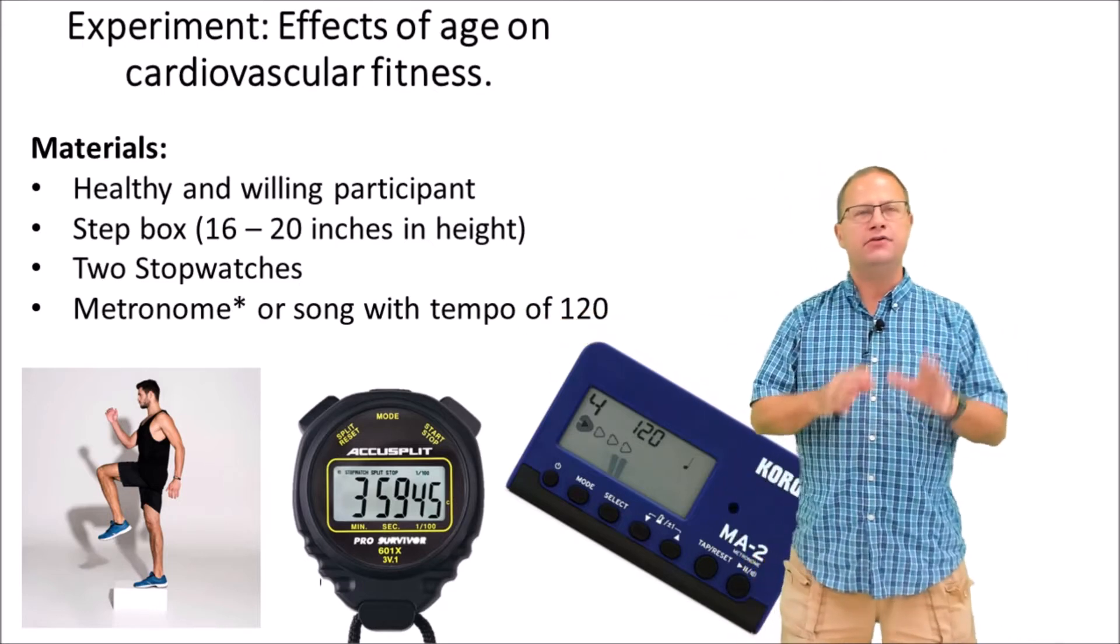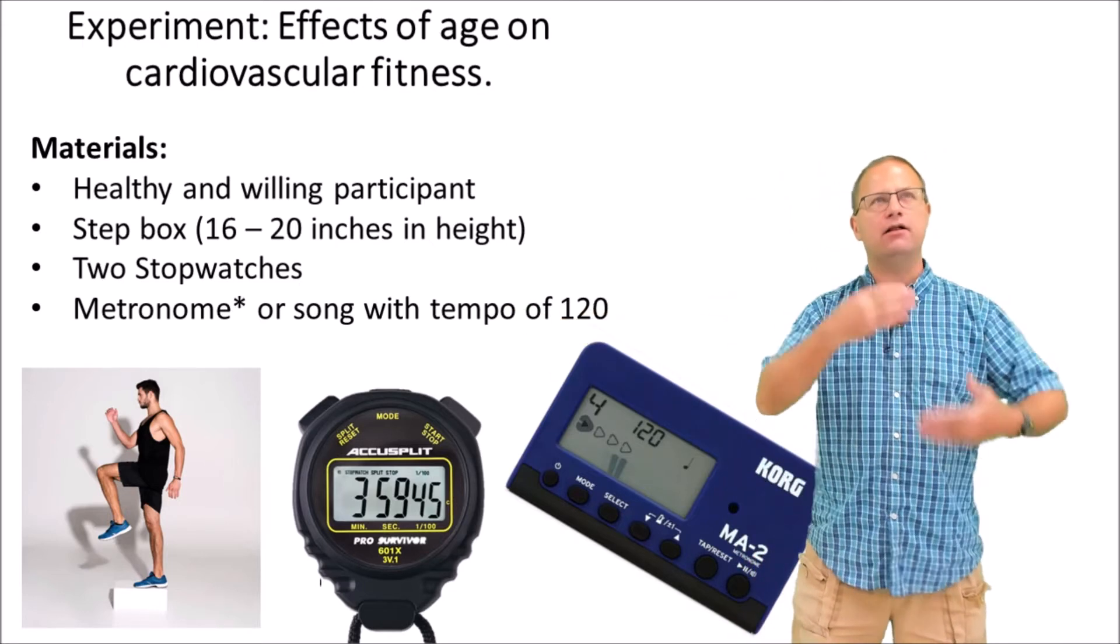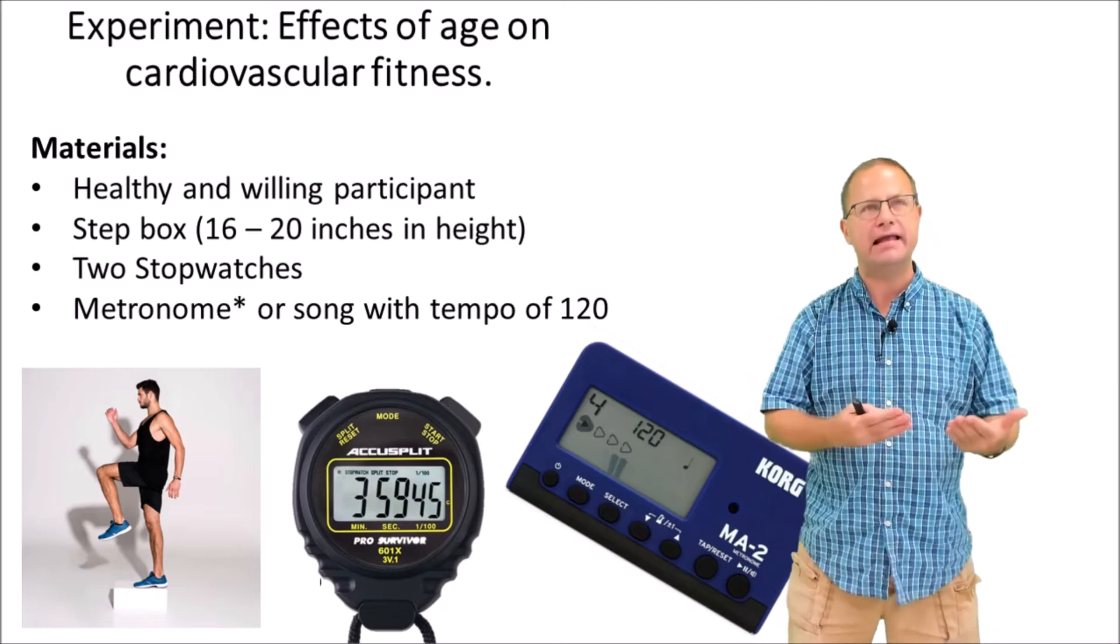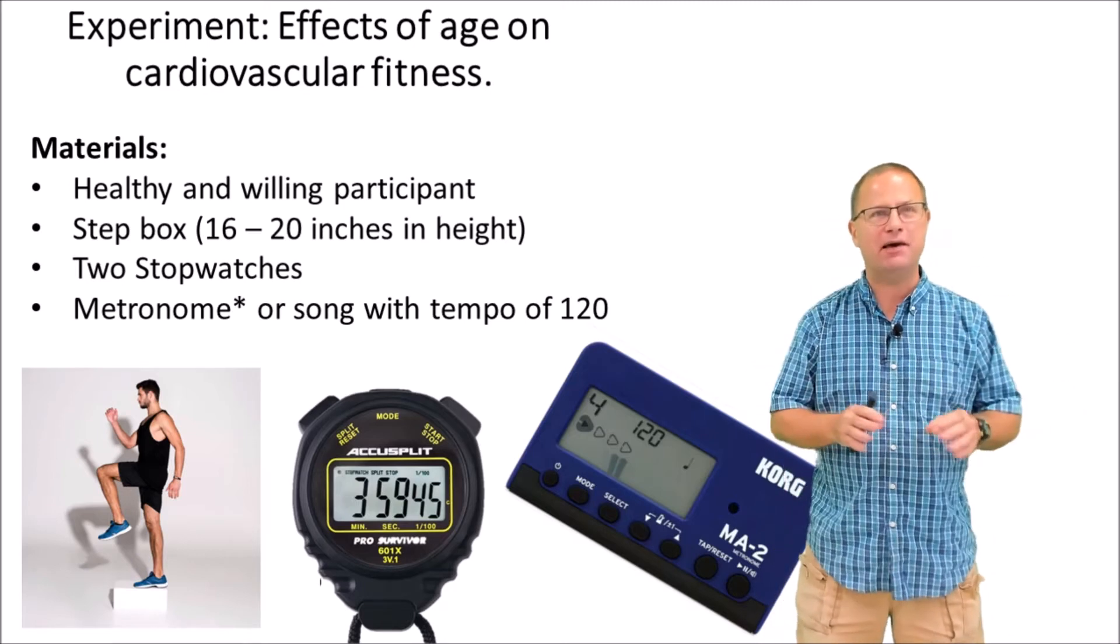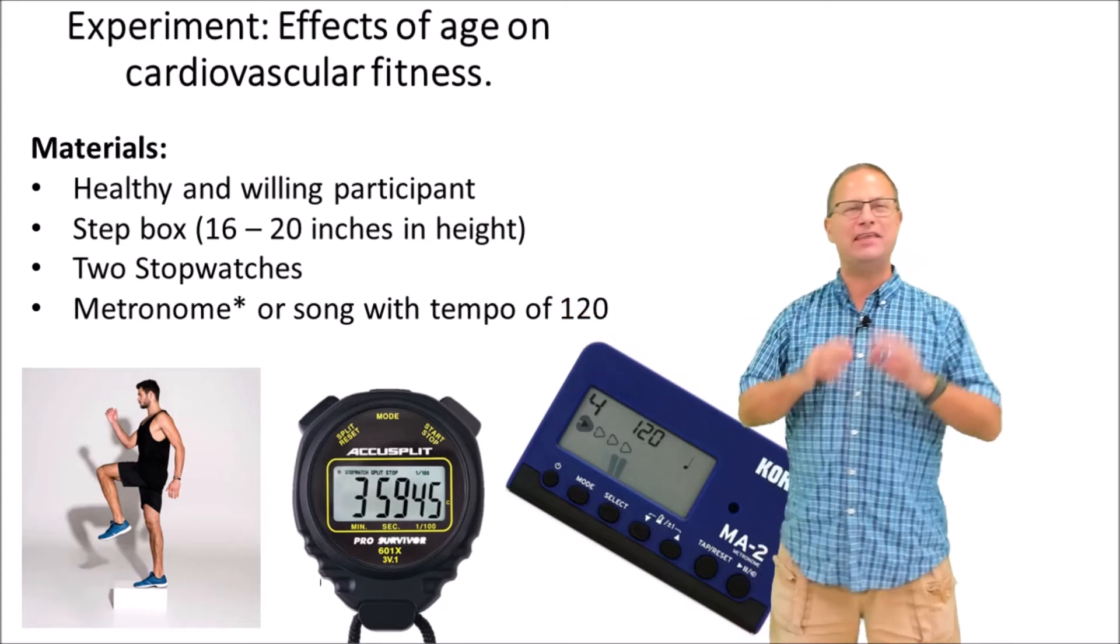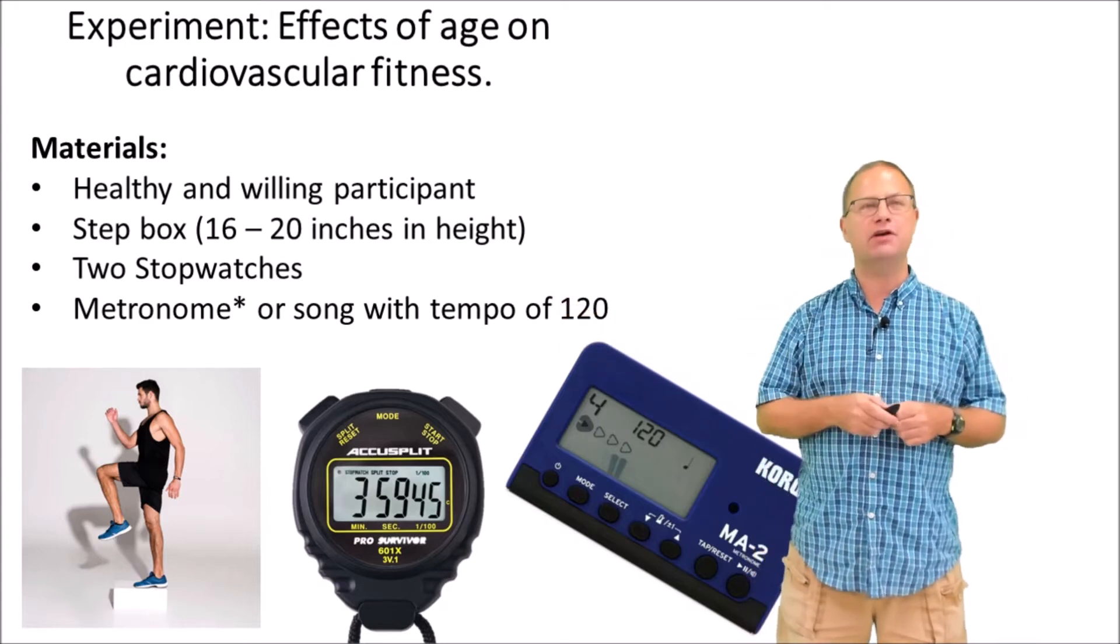And last but not least, ideally you would have a metronome to keep you going at a cycle of 30 cycles per minute. Probably most people at home don't have a metronome. So if you don't have a metronome, all you need is a song with a tempo of around 120 beats per minute.